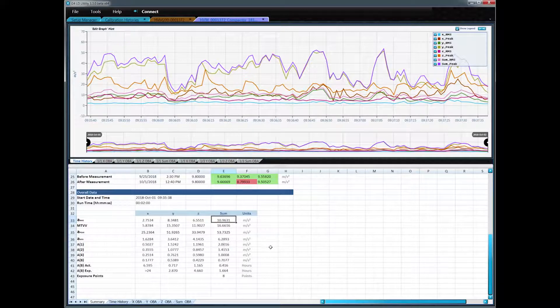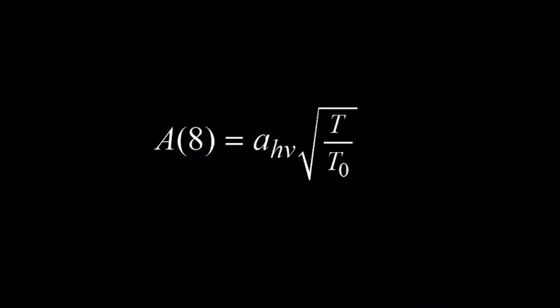To calculate when action needs to be taken or when they've reached the limit, this equation is used. Where AHV is the frequency weighted magnitude, T is the time the worker uses the machine in a work day, and T0 is the work day, typically 8 hours. I rounded my level to 11.